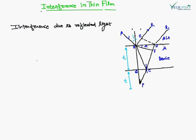The light that comes from any point on the surface of the film whose wavelength satisfies the condition 2μt·cos(r) = (2n-1)λ/2 - only those colors will be present with maximum intensity in reflected light. Those same colors will appear to us that satisfy this particular condition. First of all, we will discuss interference due to reflected light.